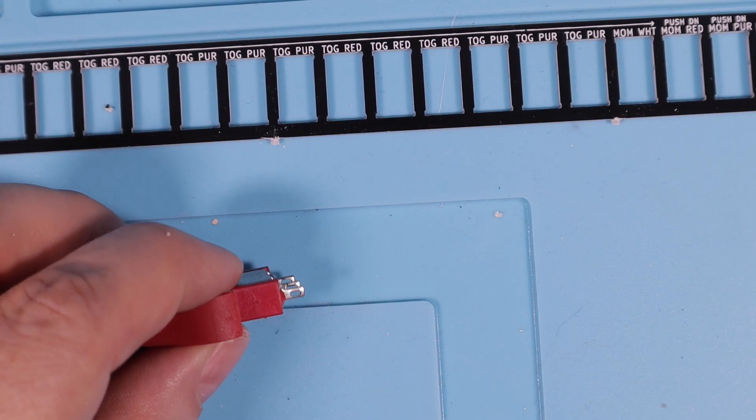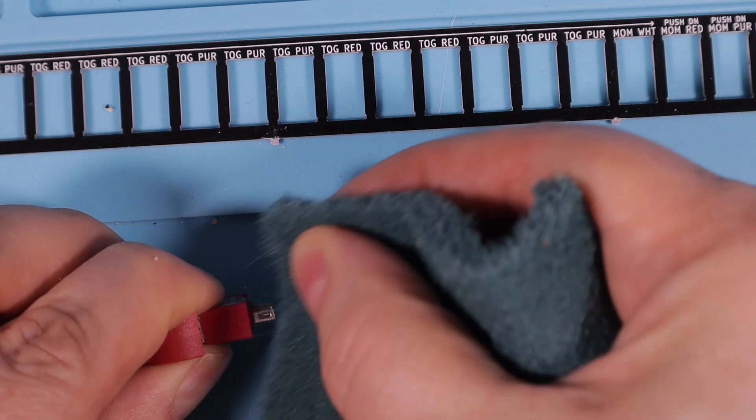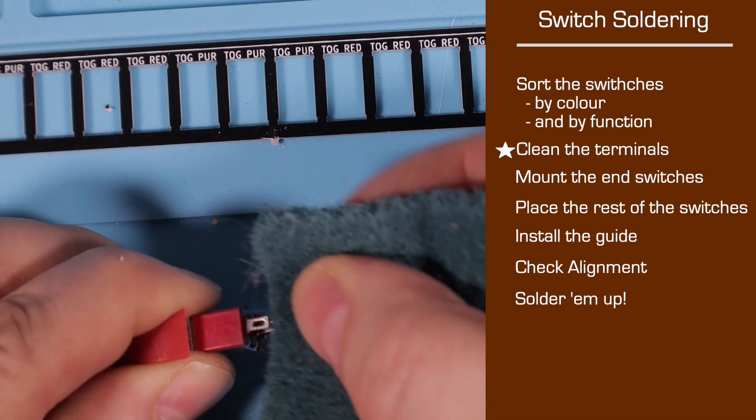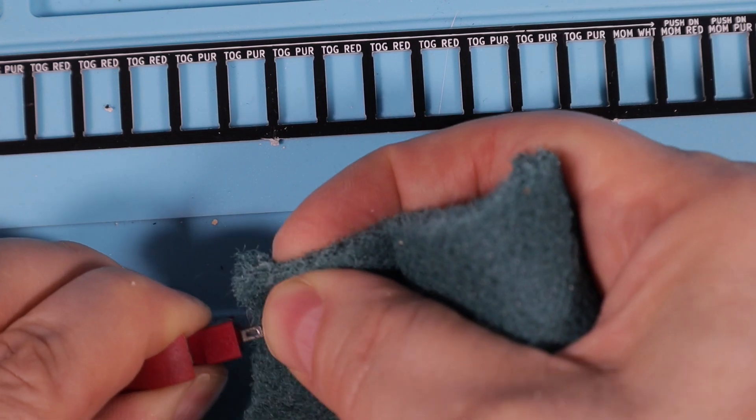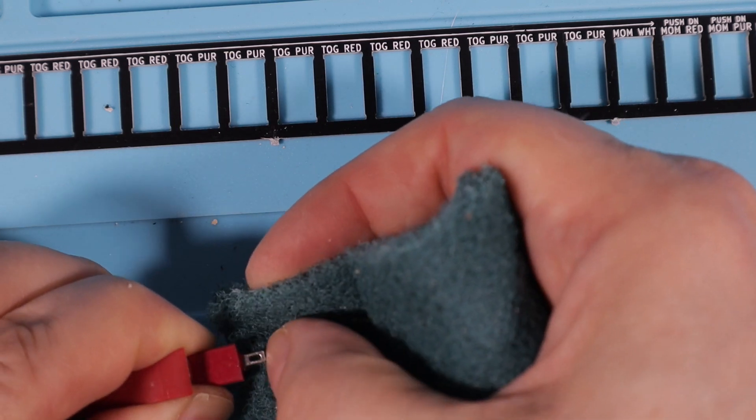Oscar's directions warned that the terminals on these switches may have tarnished. That was certainly the case on a lot of mine, so I went through each of them with a piece of Scotch-Brite, just to knock off any corrosion. You could use emery paper or contact cleaner and achieve the same thing. All we want here is a clean surface to solder.